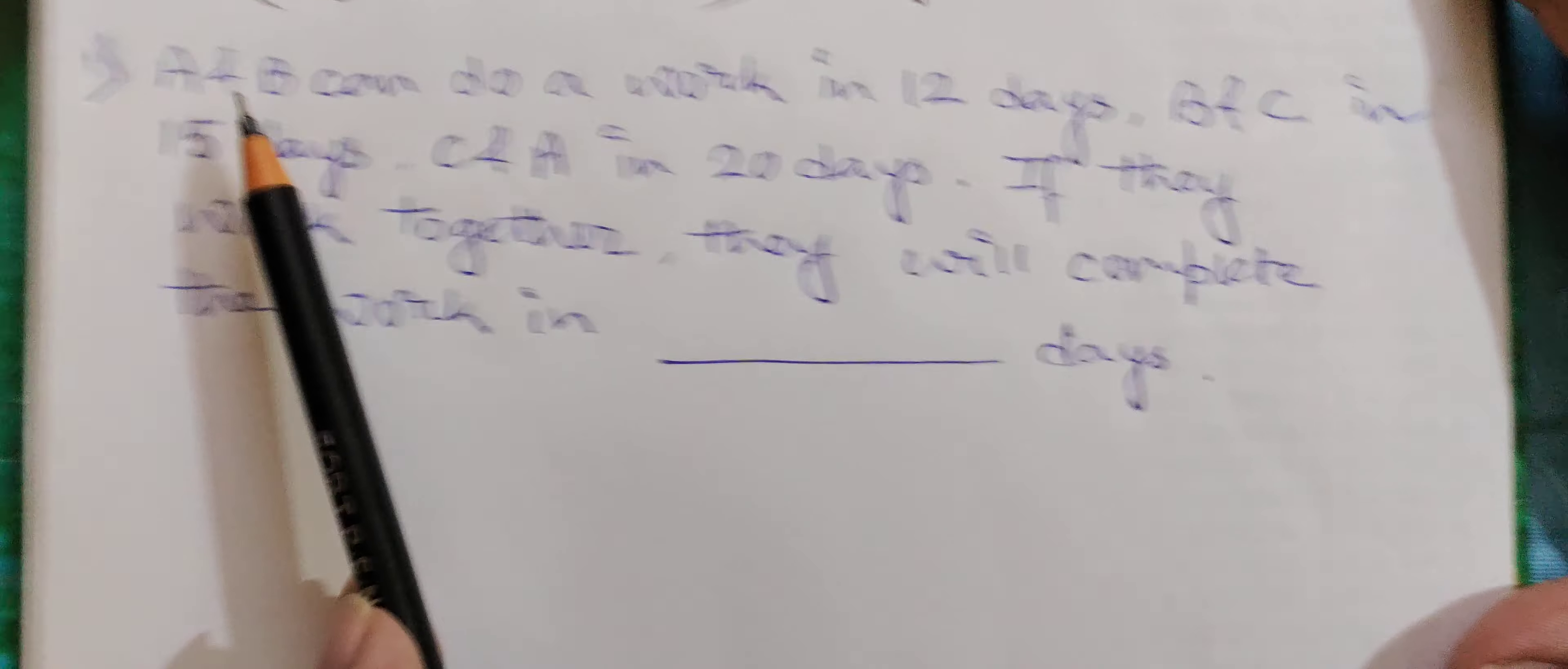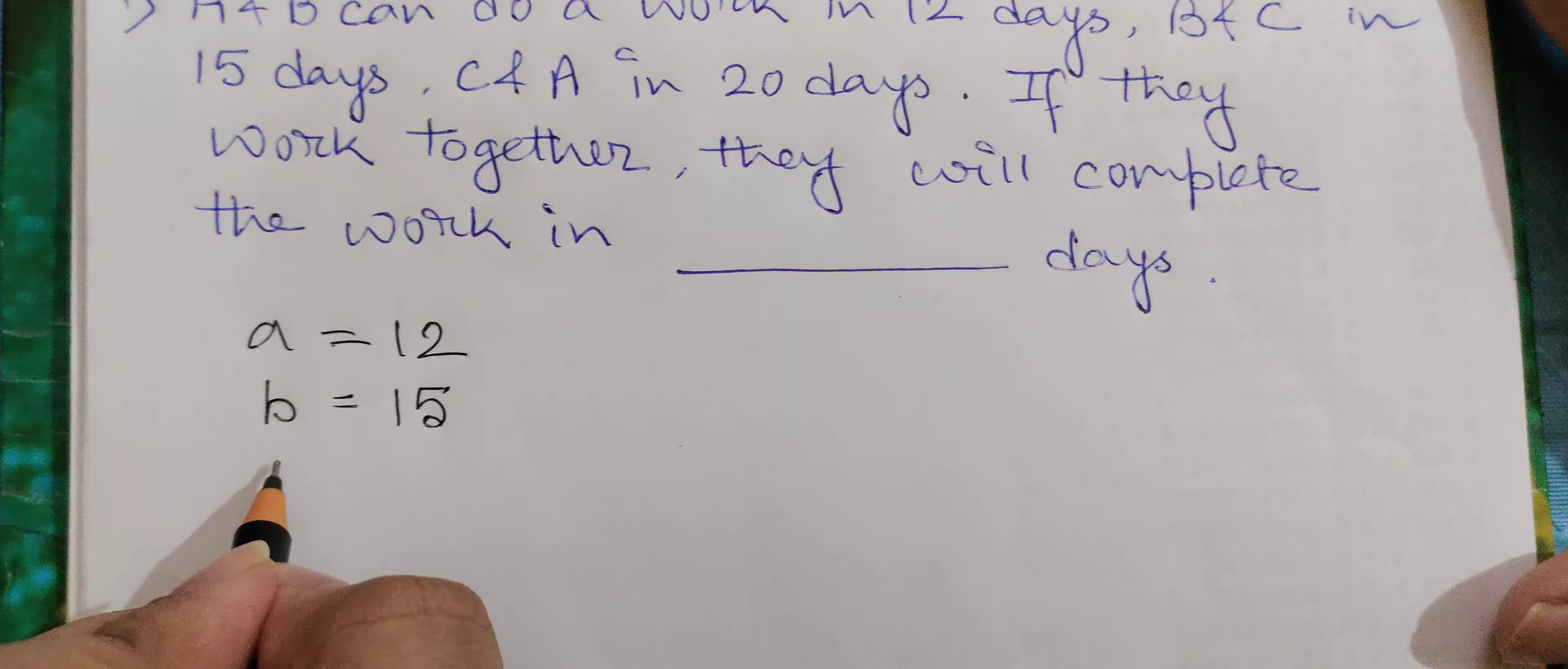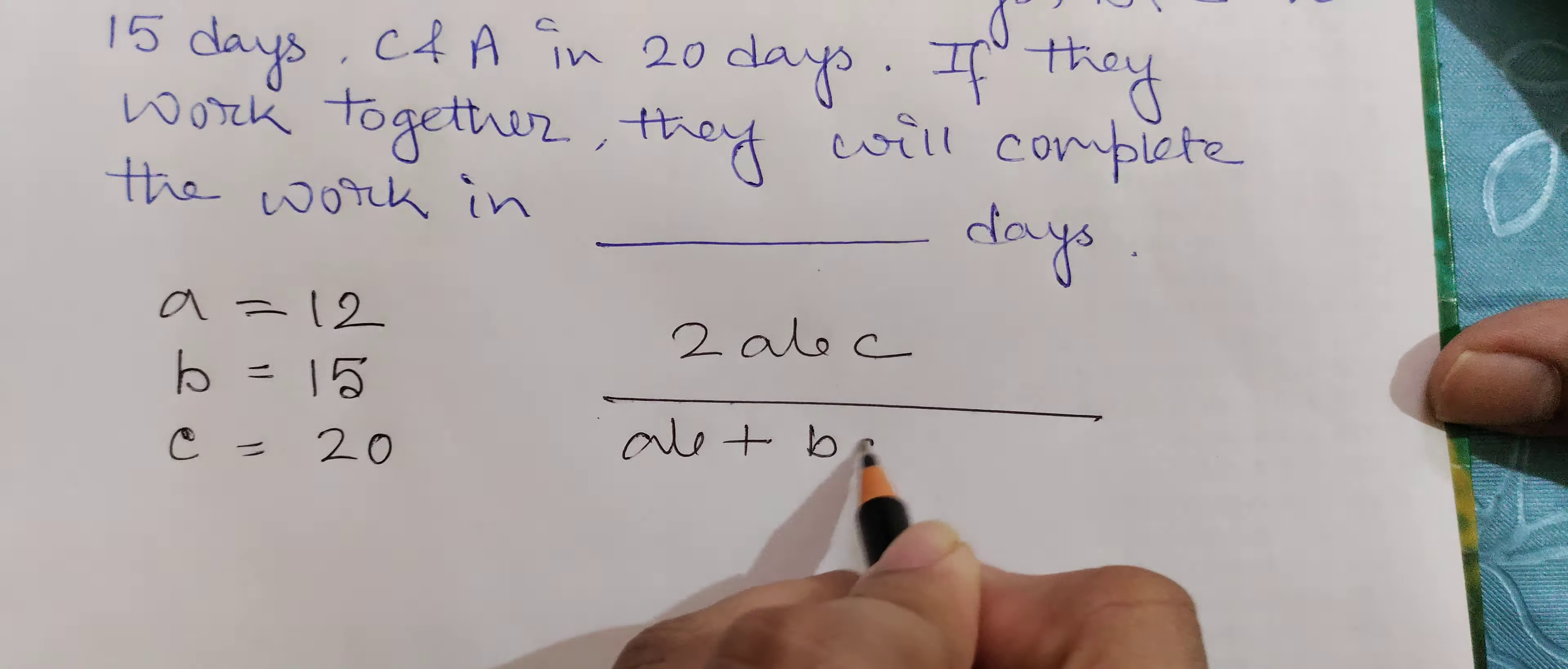Problem number one: A and B can do a work in 12 days, so a equals 12. B and C can complete in 15 days, so b equals 15. C and A can complete in 20 days, so c equals 20. Now they all three work together.